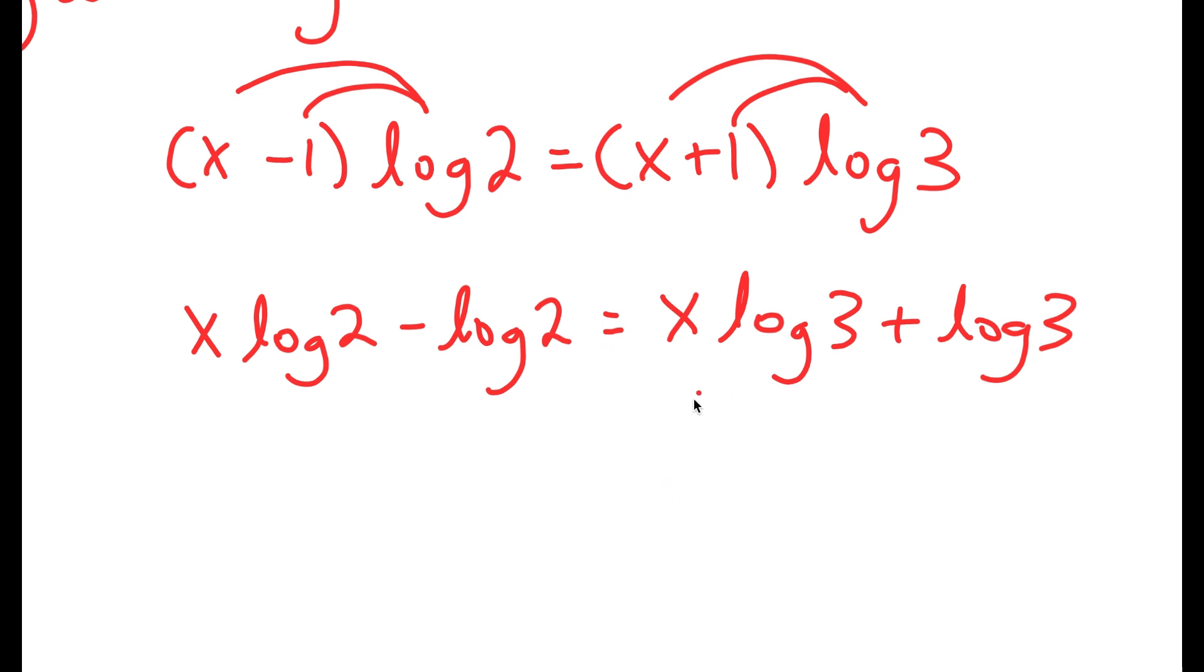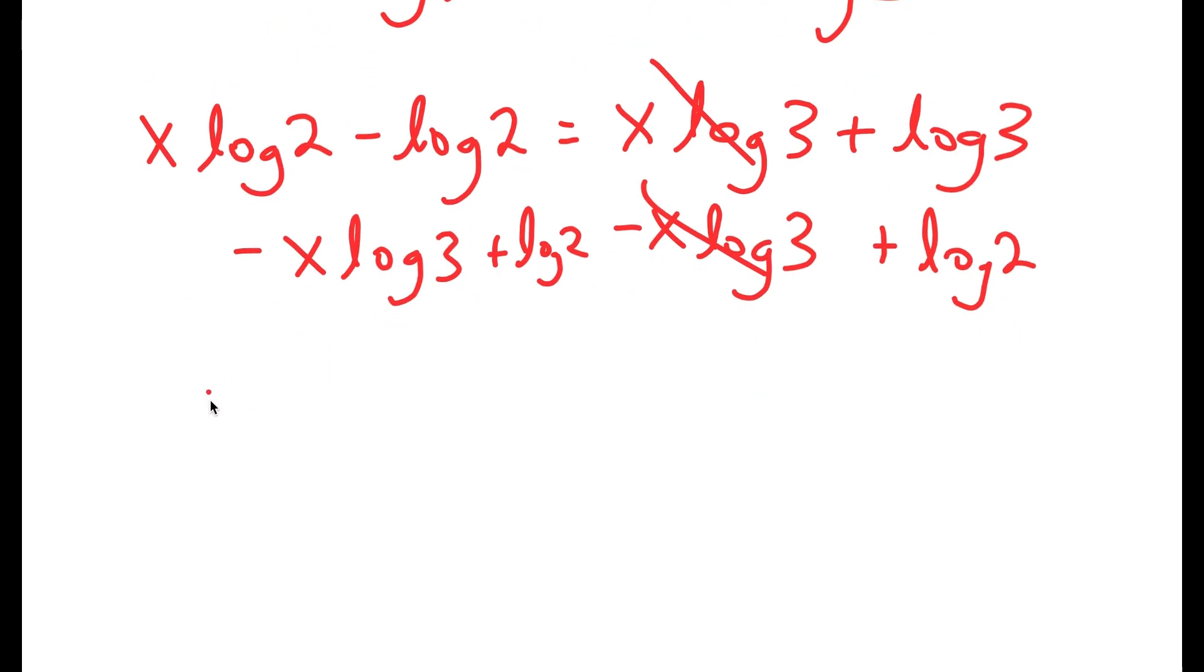So now that that's good, I'm going to subtract x times log 3 on both sides and also add log 2 on both sides. I'm doing this because now I can group all the terms that have x together and group the terms that don't have x together. So now I get x times log 2 minus x times log 3 is equal to log 2 plus log 3.